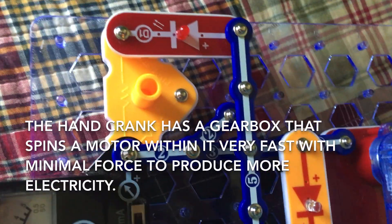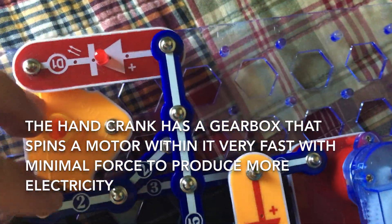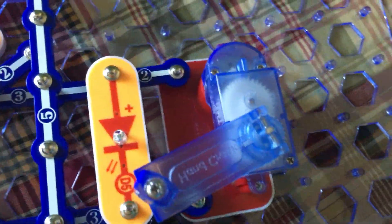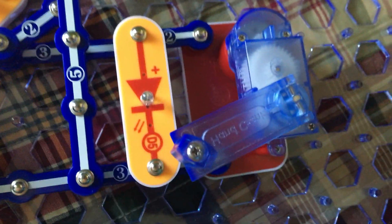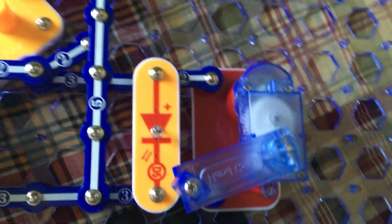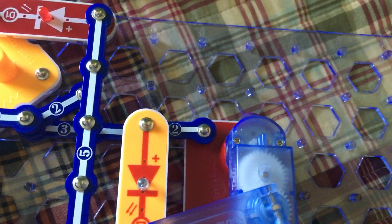The hand crank has a gearbox allowing a motor in it to spin faster and with less force than when you turn the crank, therefore producing more electricity, the more the motor spins.